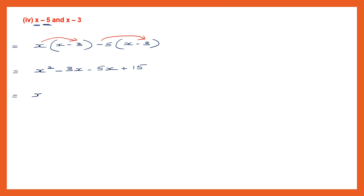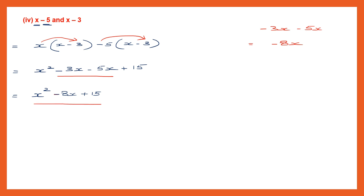Let's write the final answer. We have x square. Now here we have minus 3x and minus 5x — they are like terms. Signs are the same, so put the same sign and add: 3 plus 5 is 8, giving minus 8x. Then we have plus 15. So our answer is x square minus 8x plus 15.